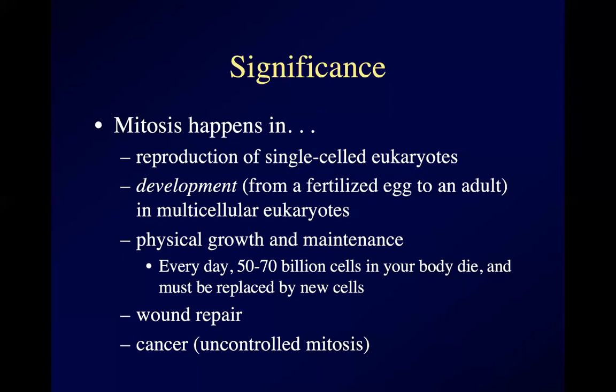Cells control when they go into mitosis by various control mechanisms. When cells in your body lose control — like losing the brakes in a car — and they start dividing out of control, you've got cancer. Cancer is basically mitosis with a stuck accelerator and broken brakes. Your cells have various mechanisms built in to keep them from going off the rails, but sometimes those mechanisms can fail. That's the fundamental definition of cancer: mitosis that you can't stop.